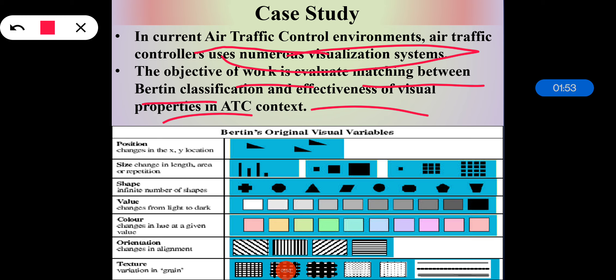These scales depend on Bertin's data types. The quantitative data type ranking has been experimentally verified by Cleveland. This ranking was built for statistical graphs, but this approach might be applied in many other visualization fields as well.